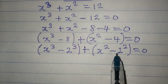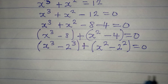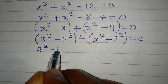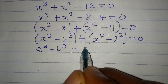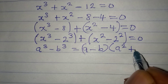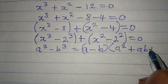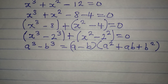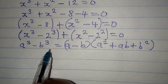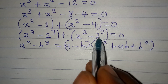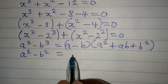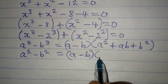I will apply the difference of two squares to the second bracket, and another standard formula to the first. Do you know that a to the power of 3 minus b to the power of 3 equals (a minus b)(a squared plus ab plus b squared)? And for difference of two squares: a squared minus b squared gives (a minus b)(a plus b).